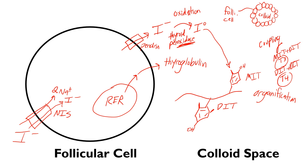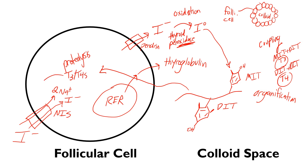At this point, the T3 and T4 are still connected to the thyroglobulin and have not been detached. What happens next is the whole unit — the thyroglobulin with the T3s and T4s — enters back into the cell. Then proteolysis occurs, which means protein cutting. It cuts off the T3s and T4s, which are then free to exit the cell and carry out their functions across the body.